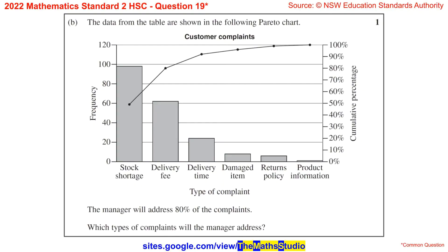Part B. The data from the table are shown in the following Pareto chart. The manager will address 80% of the complaints. Which types of complaints will the manager address?